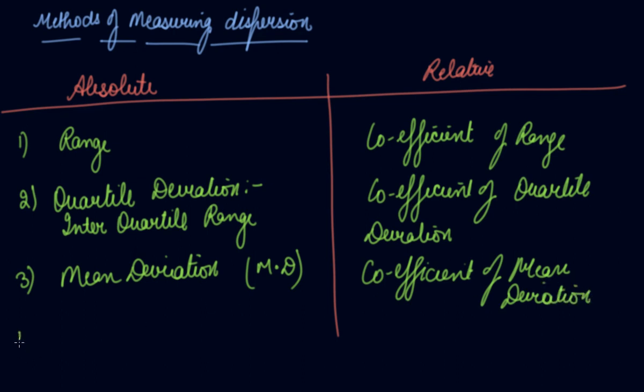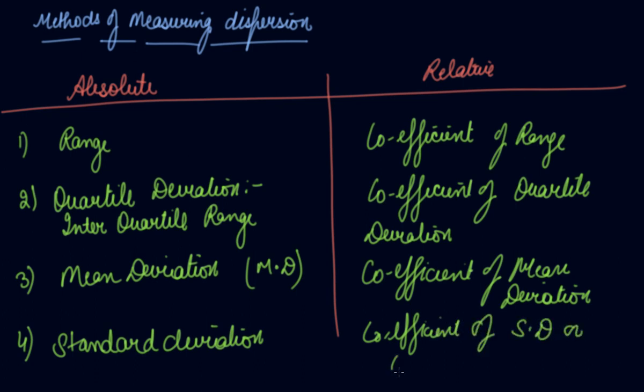The fourth is standard deviation. This is coefficient of variation, also known as coefficient of standard deviation or coefficient of variation.